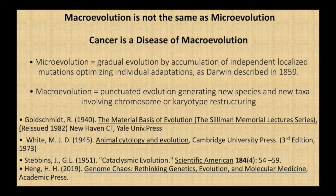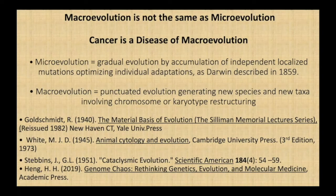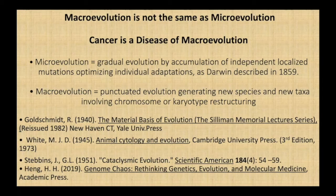Microevolution is much better understood than macroevolution because it's been studied by conventional evolutionary biologists for over a century. The distinction between the two forms of evolutionary change has been known for 80 years since Richard Goldschmidt published Material Basis of Evolution in 1940. But Goldschmidt has been ignored by conventional evolutionists. Henry Huang, who's speaking later today, has updated this theme in his book Genome Chaos, published last year. Cancer, as we will see, is clearly a disease of macroevolution, often involving large-scale genome reorganizations.